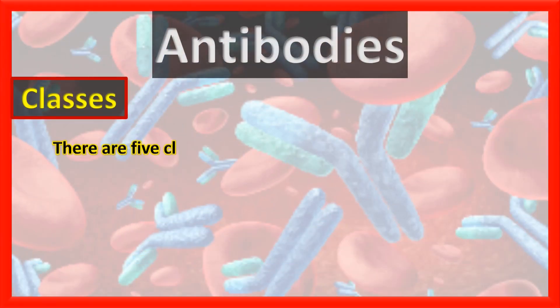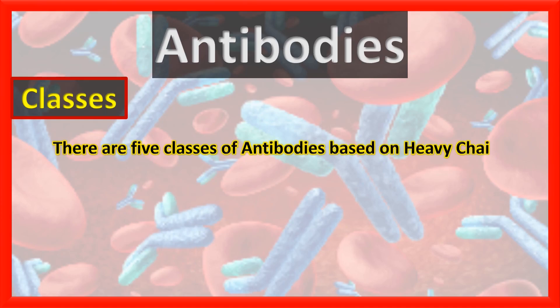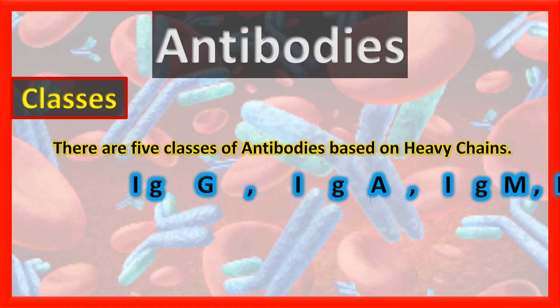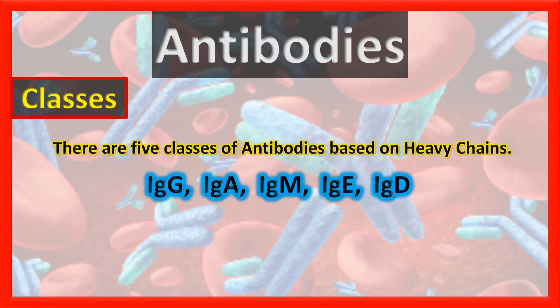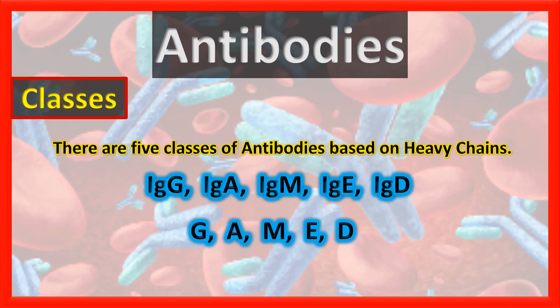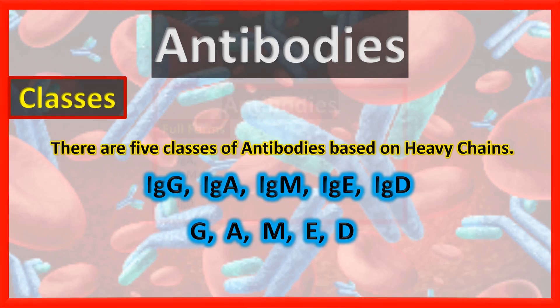There are basically 5 classes of antibodies based on their heavy chains: IgG, A, M, E, and D. To remember these 5 types, remember the word GAMED — hope it is helpful.